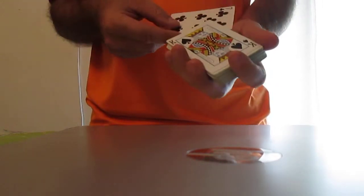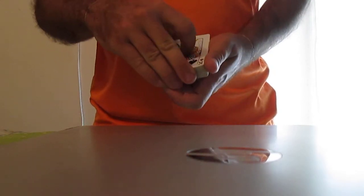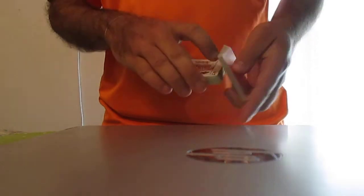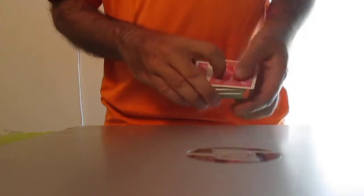We'll place the Seven of Clubs right about there. What we'll do is we'll take and turn part of the deck over. And then the rest of the deck as well. Cool.